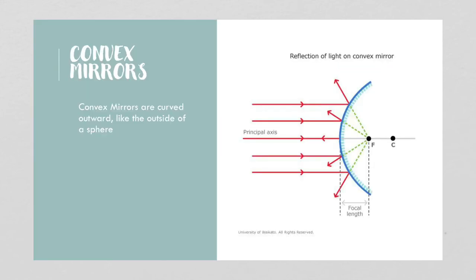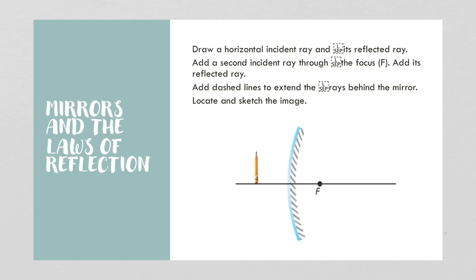Convex mirrors are curved outward like the outside of a sphere, and you can see that the light rays, when they reflect, are reflecting all over the place. For a convex mirror, you draw your horizontal incident ray in, then the reflected ray, add a second one through the focal point and add the reflected ray, then add a dashed line to extend the rays behind the mirror and locate and sketch the image.